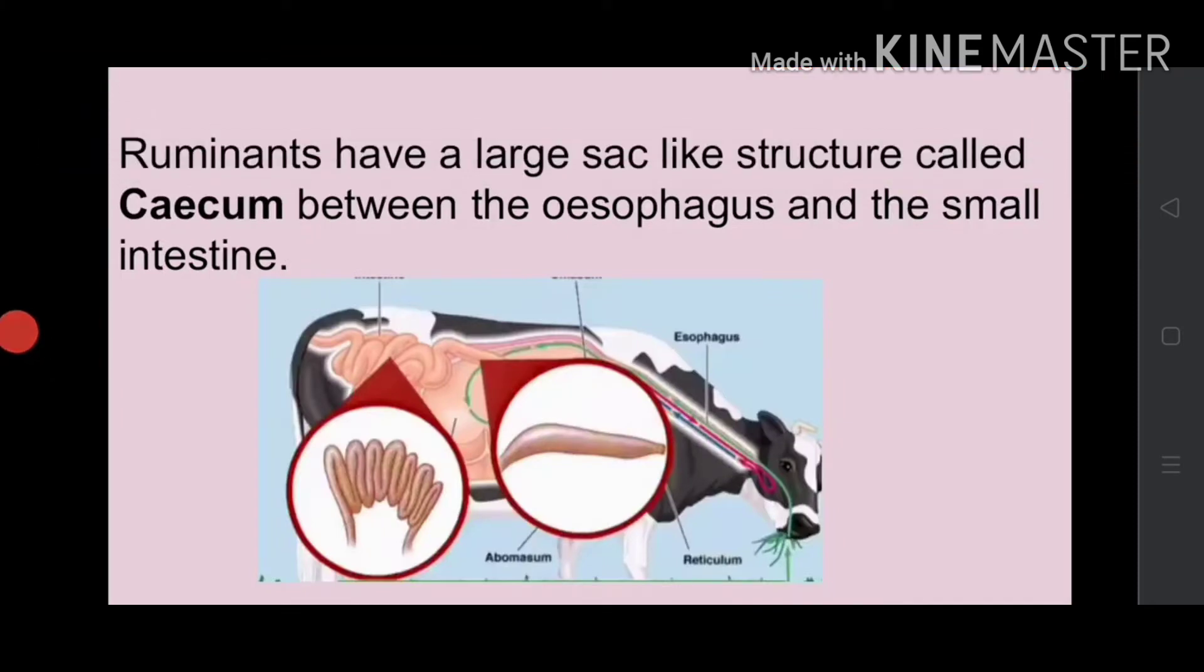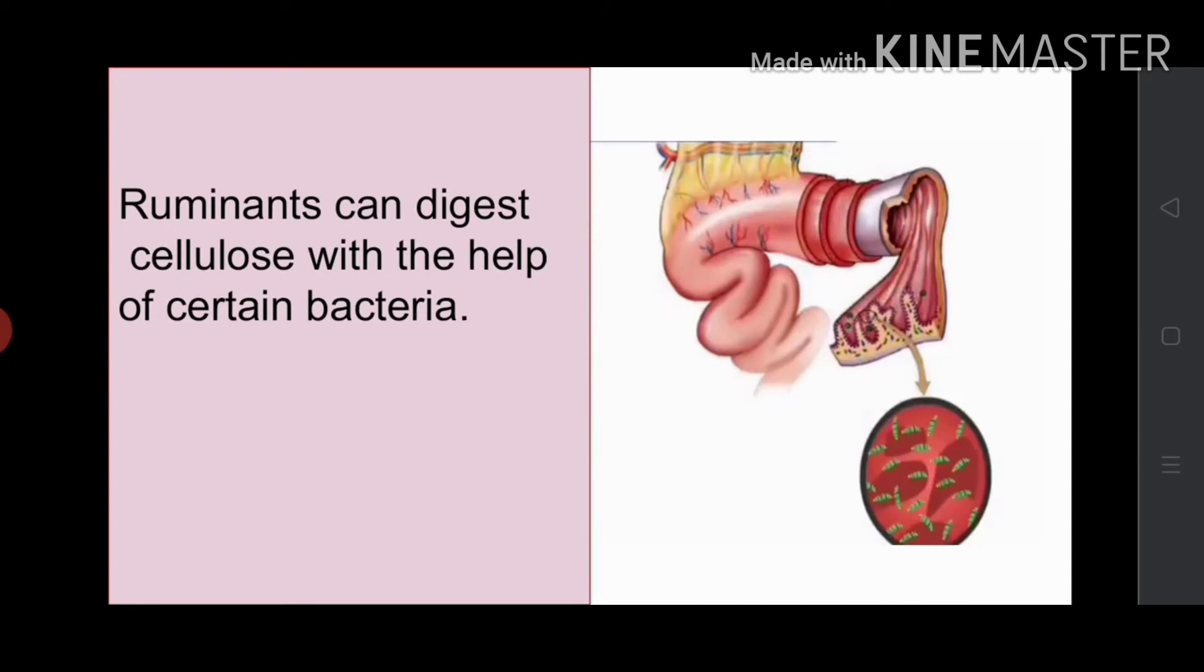These animals, that is ruminants, have a large sac-like structure called cecum between the esophagus and the small intestine. There are bacteria present in this sac-like structure that help with the digestion of cellulose, but in the case of humans, these bacteria are not present. Ruminants can digest cellulose with the help of certain bacteria present in the sac-like structure.